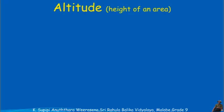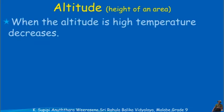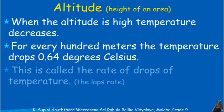Altitude refers to the height of an area. When the altitude is high, the temperature decreases. For every 100 meters, the temperature drops 0.64 degrees Celsius. This is called the rate of temperature decrease.